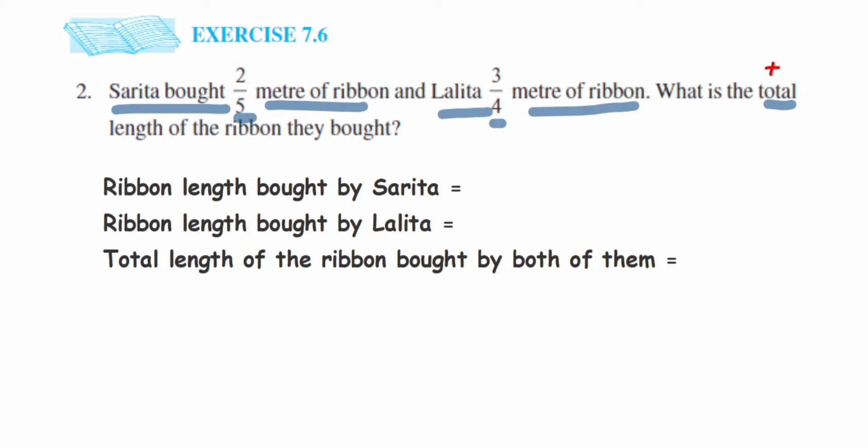Ribbon length bought by Sarita is 2/5, and ribbon length bought by Lalita is 3/4. Now they're asking for the total together, which means we have to add these two fractions.